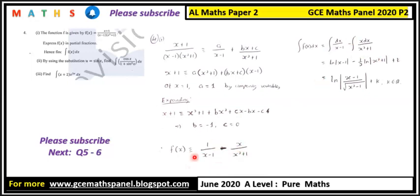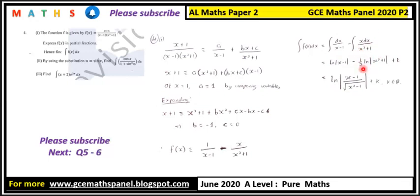To integrate, looking at the first term, differentiating x minus one gives one, so we use ln. The absolute value must be there because ln is not defined when the argument is negative. For the second term, differentiating x squared plus one gives two x, so we multiply by one half to adjust the balance. The result is ln|x minus one| minus one half ln(x squared plus one) plus constant k, which simplifies as ln of (x minus one) over the square root of (x squared plus one), plus k.